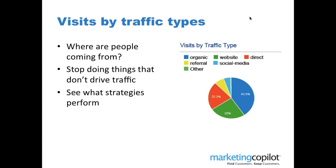Visits by traffic type is really important for lead generation — you want to know where people are coming from. Is it organic search driving the best traffic? Social media? Referrals? Traffic types include organic, direct (someone typing your URL directly), referrals, social media, and other. A lot of times people spend time on something like Facebook and it's not really driving relevant traffic. Stop doing things that don't drive the right traffic and focus on strategies that perform best for you.